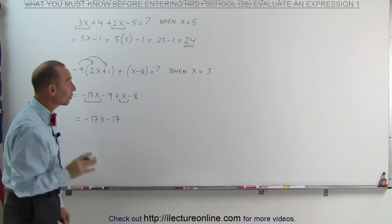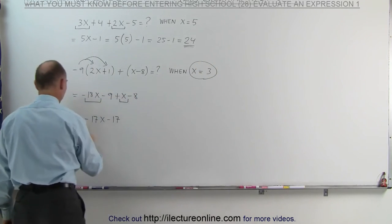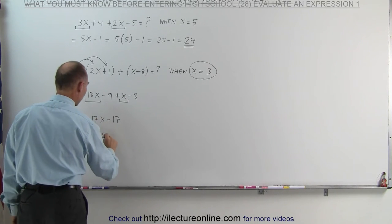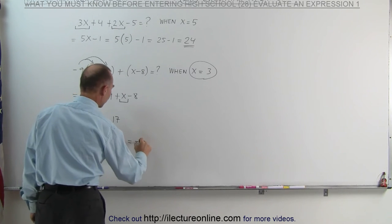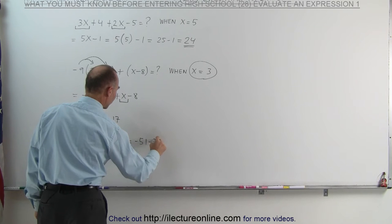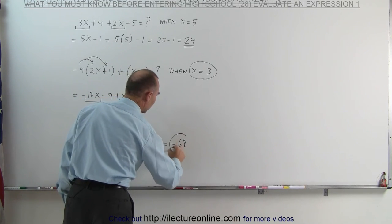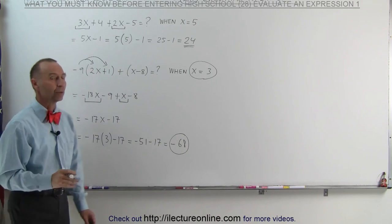Now we can evaluate the expression because they told us that x is equal to 3. Therefore, this becomes equal to minus 17 times, instead of x, we write the number 3, minus 17, which is equal to minus 51 minus 17, which is equal to minus 68. And that would be the value of the expression when x equals 3.